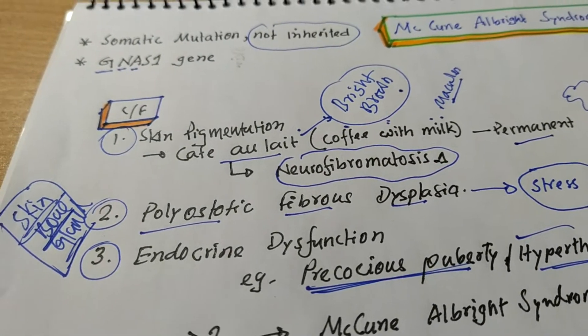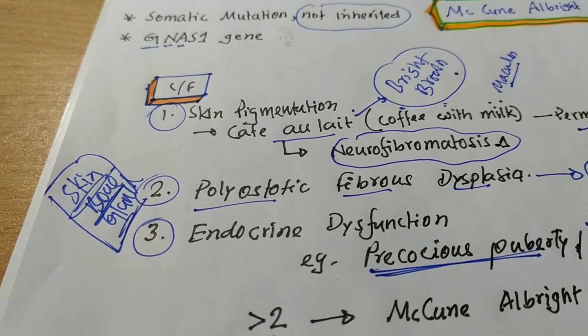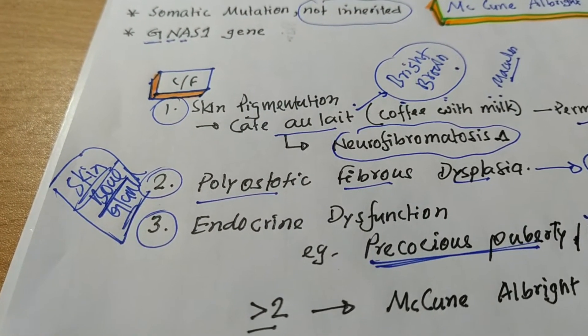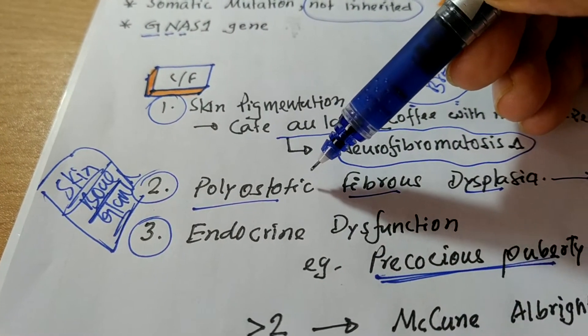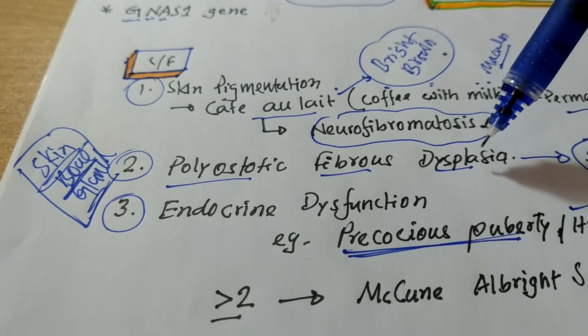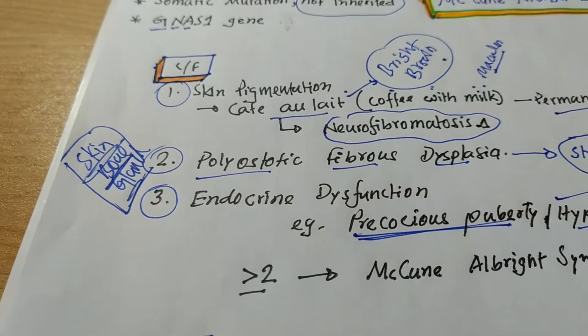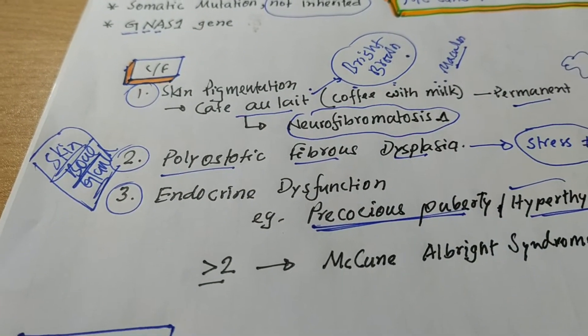The number two clinical manifestation of this disease is bone disorder, metabolic bone disorder, sorry, bone disorder that is called polyostotic fibrous dysplasia. Polyostotic fibrous dysplasia. Due to this condition,